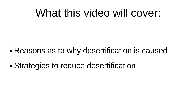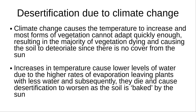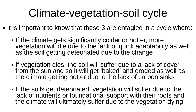There are many reasons as to why desertification is caused, ranging from climate change to soil erosion. Climate change causes the temperature to increase and most forms of vegetation find it hard to adapt quickly enough, resulting in the majority of vegetation dying and causing the soil to deteriorate. Furthermore, the increases in temperature cause lower levels of water due to the higher rates of evaporation, which leaves plants with less water and subsequently they similarly die, leaving desertification to worsen as the soil is baked by the sun.